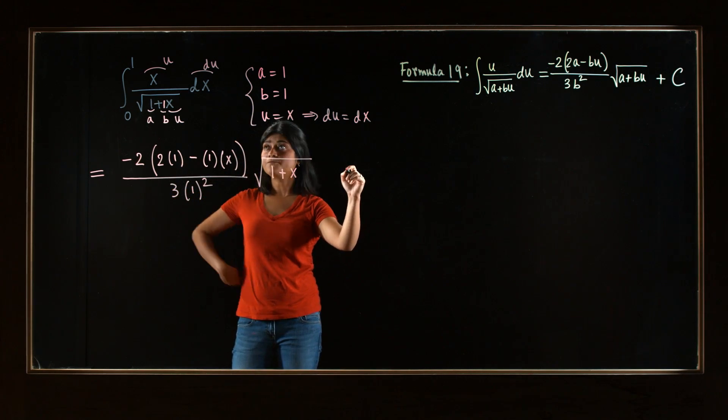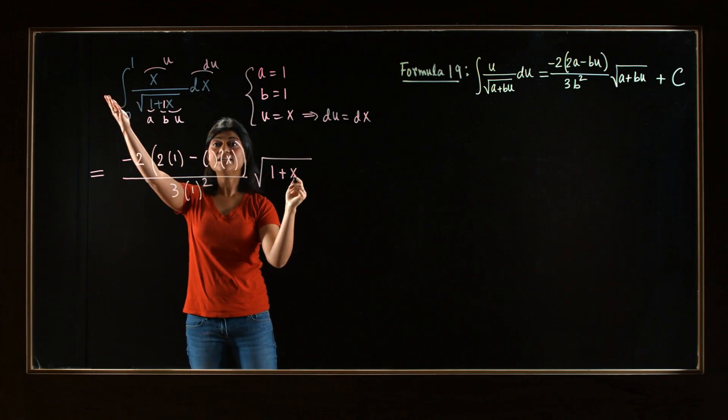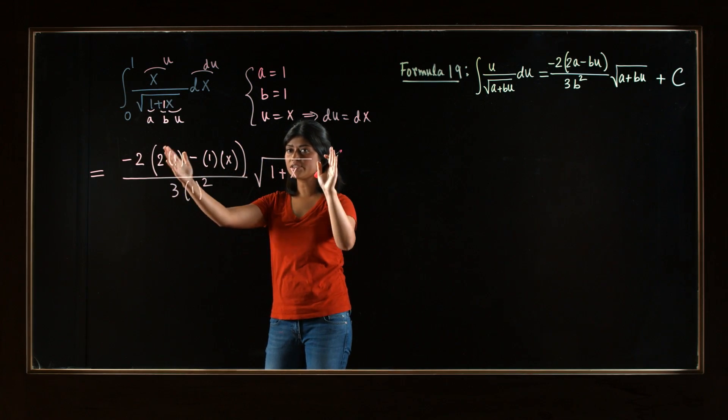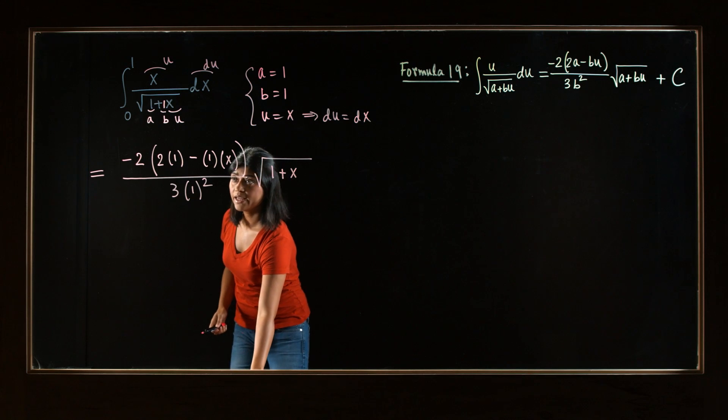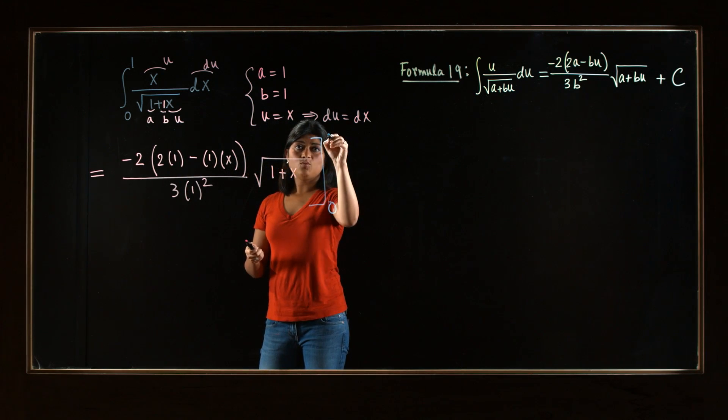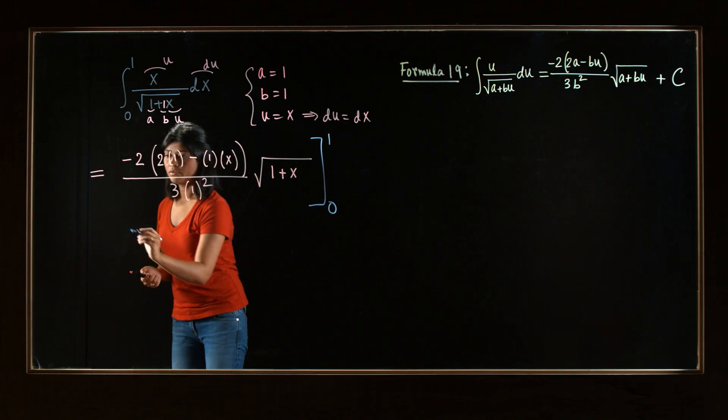Now, we should write plus c if it was an indefinite integral, but this is not. This is just a definite integral. So this is our antiderivative, and then we have to evaluate this at 1 and 0.